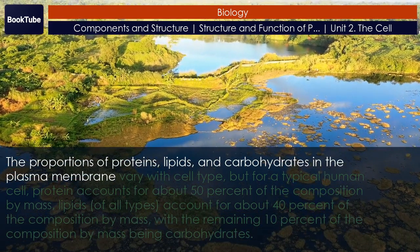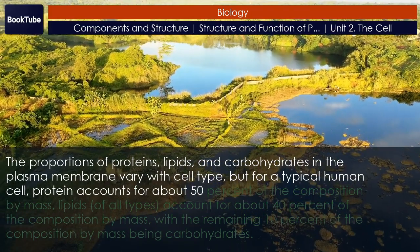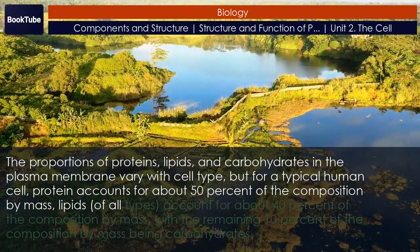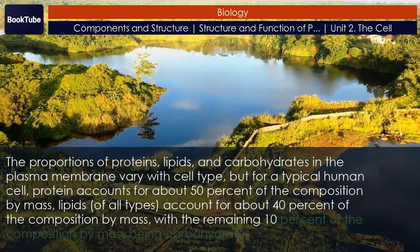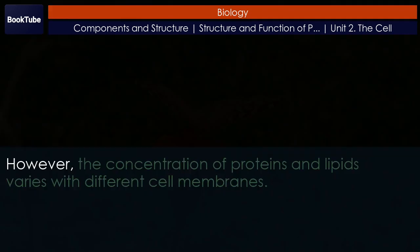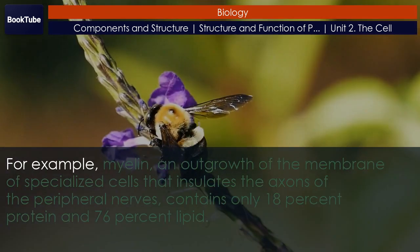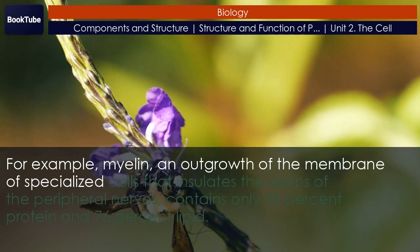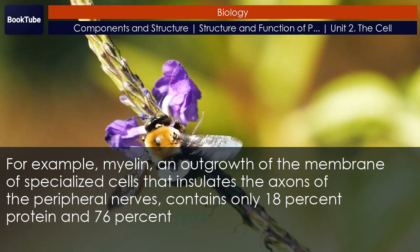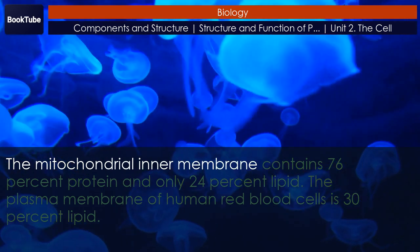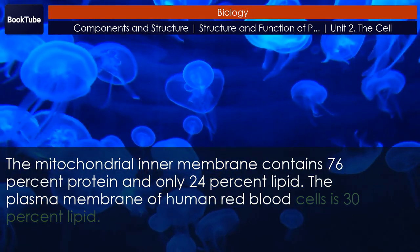The proportions of proteins, lipids, and carbohydrates in the plasma membrane vary with cell type, but for a typical human cell, protein accounts for about 50% of the composition by mass, lipids of all types account for about 40%, with the remaining 10% being carbohydrates. For example, myelin contains only 18% protein and 76% lipid, while the mitochondrial inner membrane contains 76% protein and only 24% lipid.